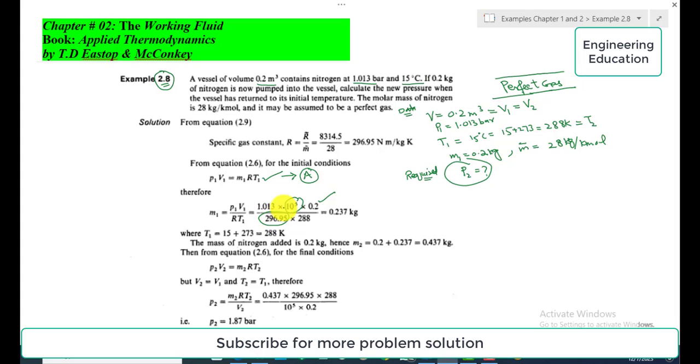The specific gas constant R is calculated from the expression: R = R̄/M̄, where R̄ is the universal gas constant with a fixed value of 8314.5 newton meters per kilomole per kelvin, and M̄ is 28. Simplifying this we get 296.95 newton meters per kilogram per kelvin. Here is a slight difference between the units of specific gas constant and molar gas constant.